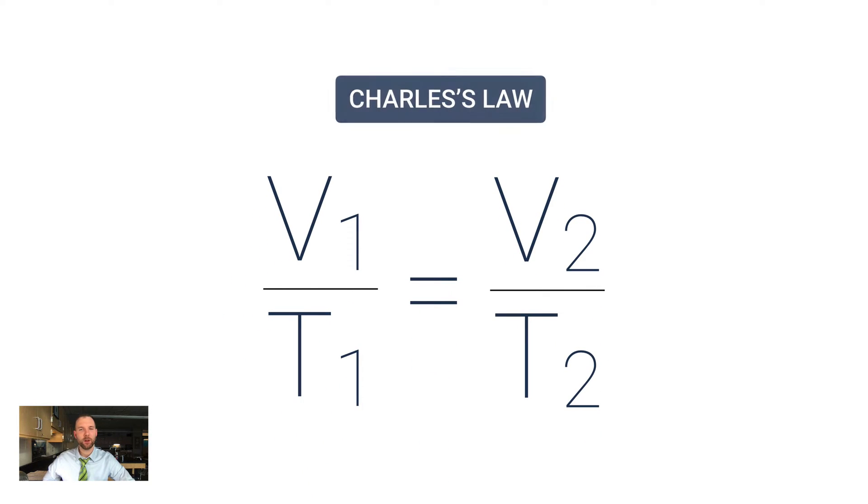So what does this actually look like algebraically? It looks like this: V1 over T1 equals V2 over T2. And don't forget, these ones and twos don't change the math - the ones and twos represent situation one and situation two of the same gas. So you can kind of think of this like it's a before and after situation, where this is the before side and this is the after side.